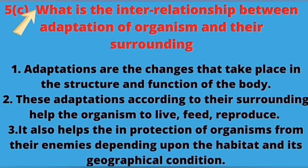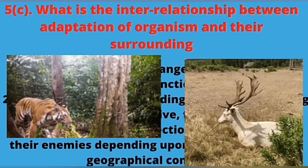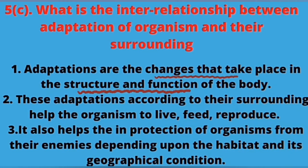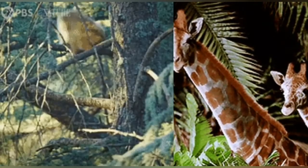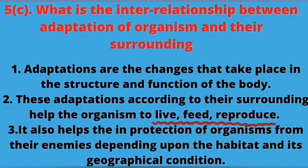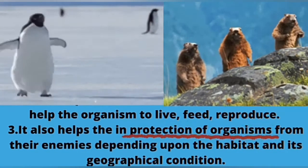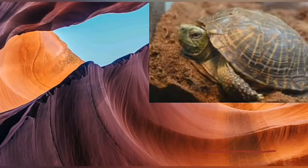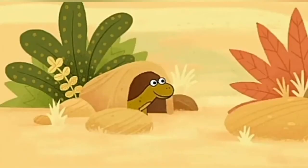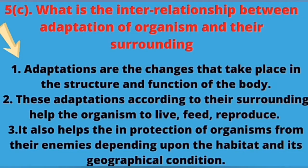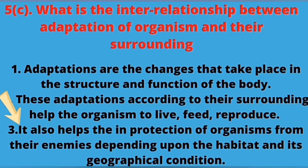Next question: What is the interrelationship between adaptation of organisms and their surroundings? Adaptation is the long-lasting change in body structure or function. Adaptations help an organism to live, eat, and reproduce according to its surroundings. They also protect animals depending upon their habitat. Different animals use different techniques to protect themselves — like desert animals and grassland animals. Answer: (1) Adaptations are the changes that take place in the structure and function of the body. (2) These adaptations, according to their surroundings, help the organism to live, feed, and reproduce. (3) They also help in protection of organisms from their enemies, depending upon the habitat and its geographical conditions.